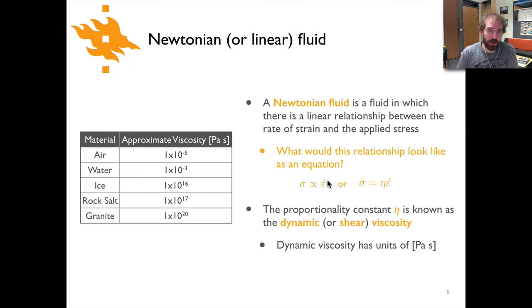So we could have something like this where we say that the stress is proportional to epsilon dot. Epsilon before was strain. If we put a dot on top of it that means it is the strain rate. That is kind of a common notation to indicate the rate of something is to put a dot on top. So here we have stress proportional to strain rate.